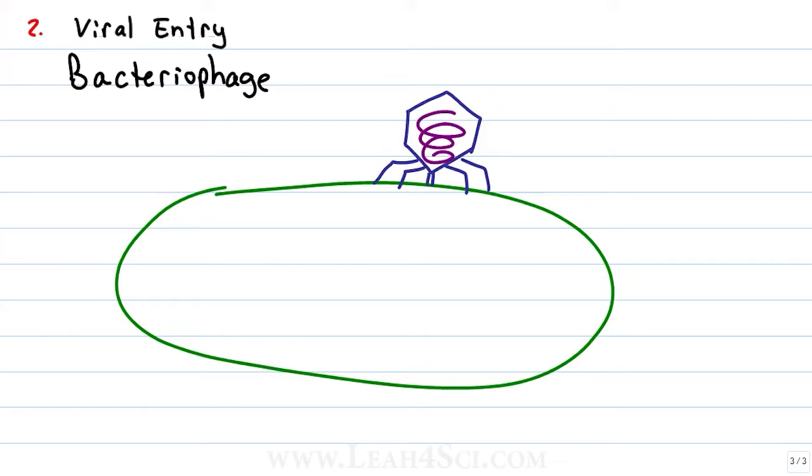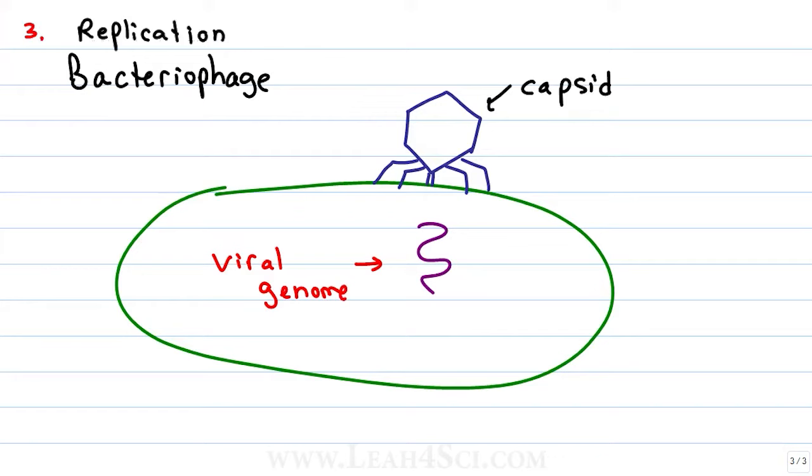Once the virus is attached, we get viral entry with a goal of getting the virus into the cell. Viruses enter bacteria in a slightly different way. If a bacteriophage latches onto the receptors on bacteria, instead of taking the entire virus into the cell like the influenza, the virus creates a hole. It creates a channel into the cell so that the capsid, the protein coat remains on the outside but the viral genome, DNA or RNA is able to be injected directly into the cell. The viral genome is now ready for replication in the bacteria.